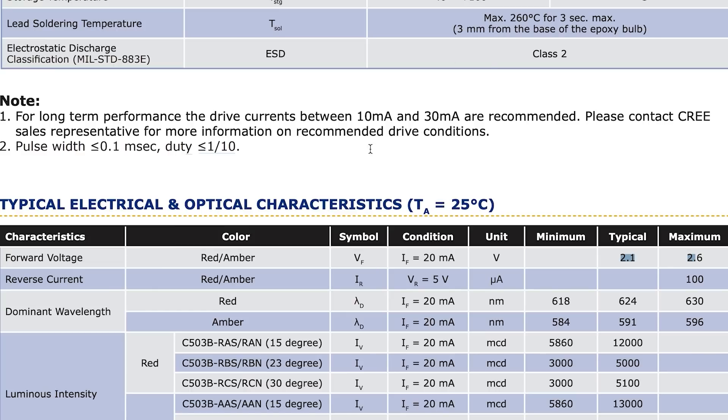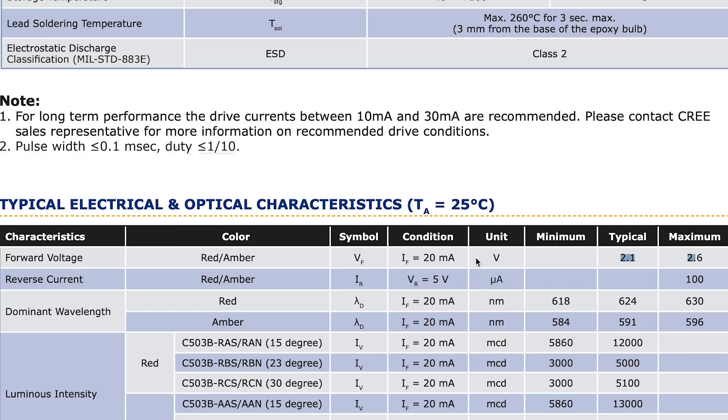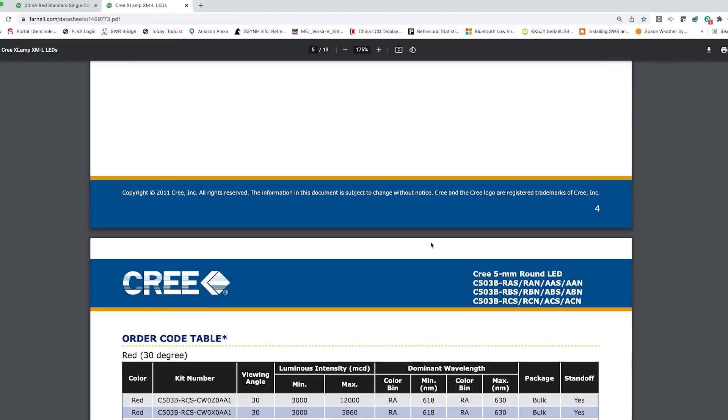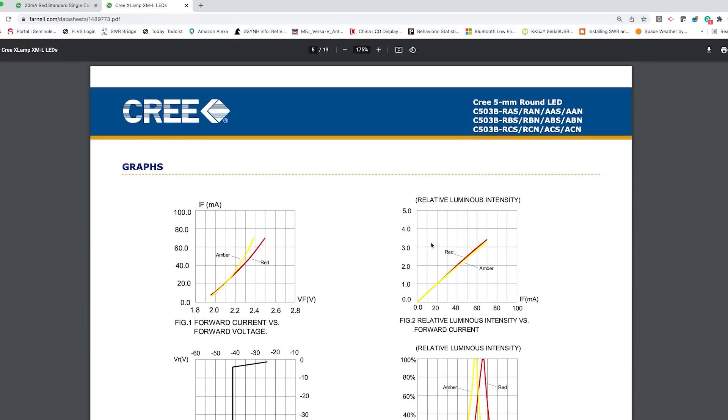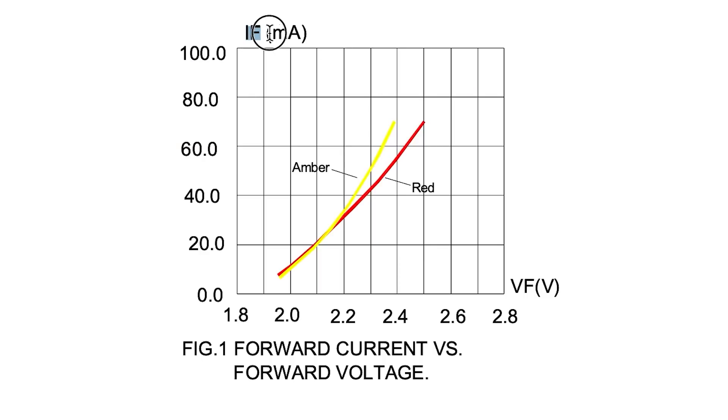So if we scroll down, we have a bunch of other LEDs, different part numbers, and then we have this section here that shows the forward current along the Y axis and the forward voltage along the X axis. So at 20 milliamps, you can see where they get that number of 2.1 volts from. And if we increase the drive current or current going through the LED, the forward voltage actually increases.